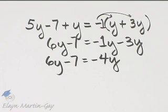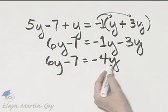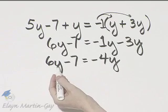No fractions, no parentheses, nothing that can be simplified on either side of the equation. Notice I have a variable term here, number, variable term.